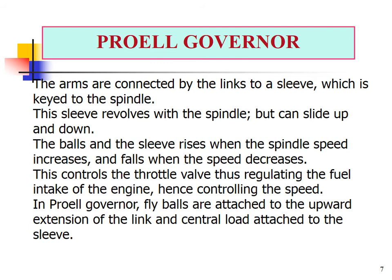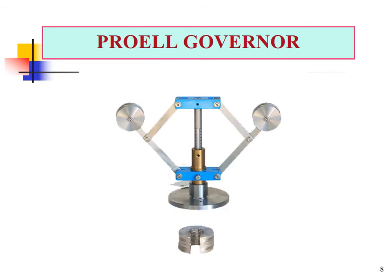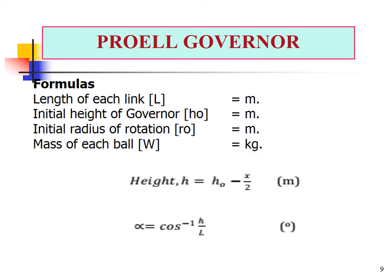In the Proel Governor, the fly balls are attached to the upward extension of the links, and a central load is attached to the sleeve. The balls are attached with external links and a central load acts on the Proel Governor. The formula for calculating Proel Governor values: height h is equal to h₀ minus x divided by 2, and alpha is equal to inverse cosine of h divided by L in degrees.